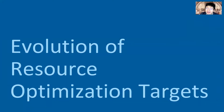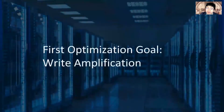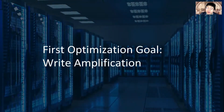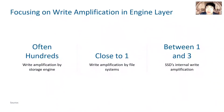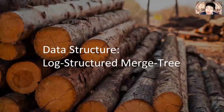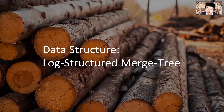RocksDB's performance optimization targets did change over time. Initially, the major goal was to reduce write amplification. SSDs have limited erase cycles, so reducing writes helps devices endure. Different layers can introduce write amplification, and while some people focus on the internal amplification of SSDs or the OS layer, we determined that the storage engine layer introduced the most significant write amplification. So we focused on that layer, which turned out to be the correct decision. That's why we picked the log-structured merge tree as the main data structure — it provides good write amplification for most use cases.